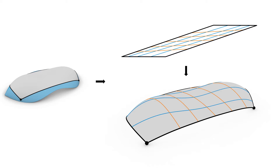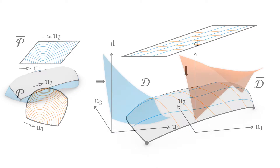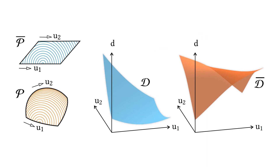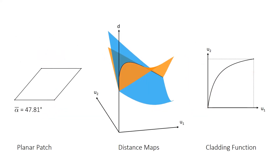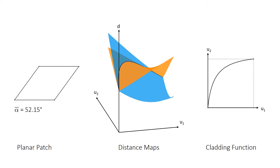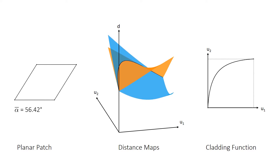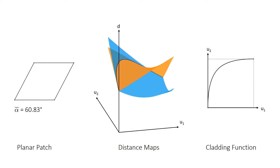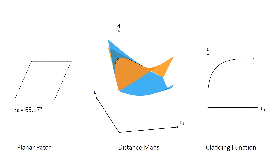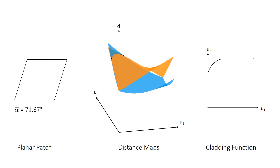Deployment of the kinematic system depends on one degree of freedom and bending. To characterize the shape of the surface and the planar patch, we create distance maps, which are shown here on the right. Note that the shape of the blue distance map depends on the shape of the planar patch. We intersect the distance maps to find suitable grid members. Their distribution is determined by the cladding function, shown on the right. Note how the shape of the planar patch influences the cladding function.